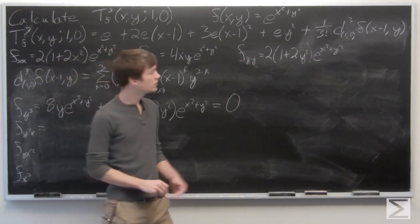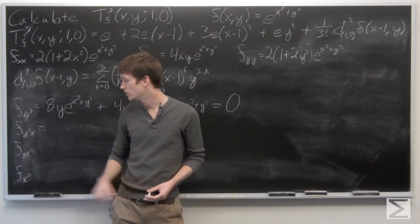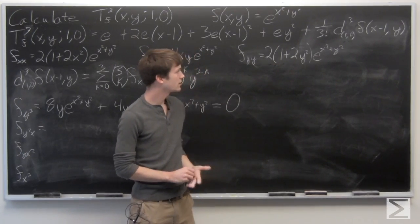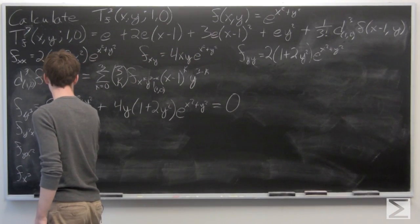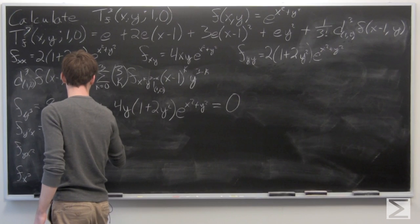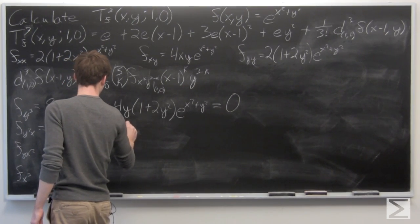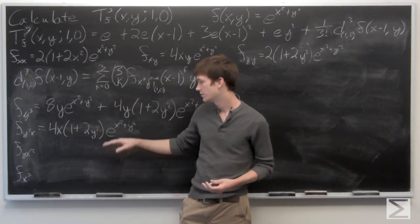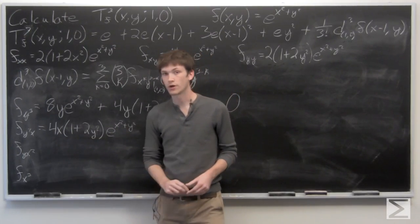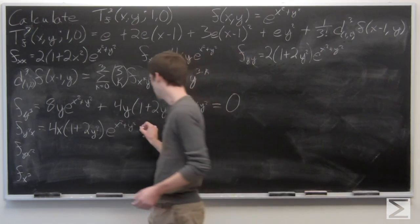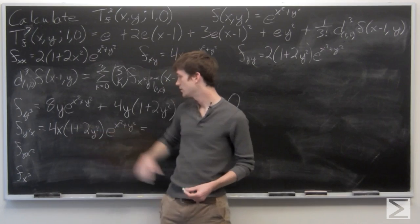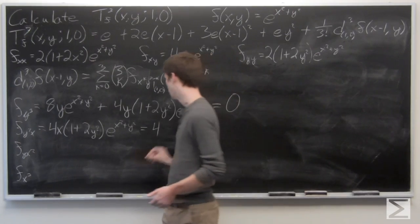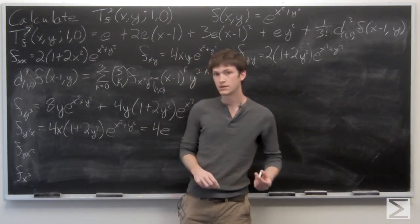We can use f_yy again to compute f_yyx, which is the partial derivative of f_yy with respect to x. We get 4x times the quantity 1 plus 2y squared times e to the x squared plus y squared. Evaluating at the point (1,0), we have 4 times 1, which is 4, and e raised to the power of 1, so we get 4e.